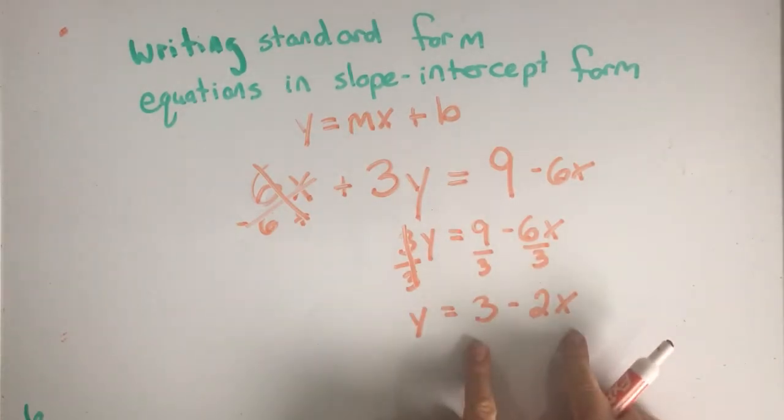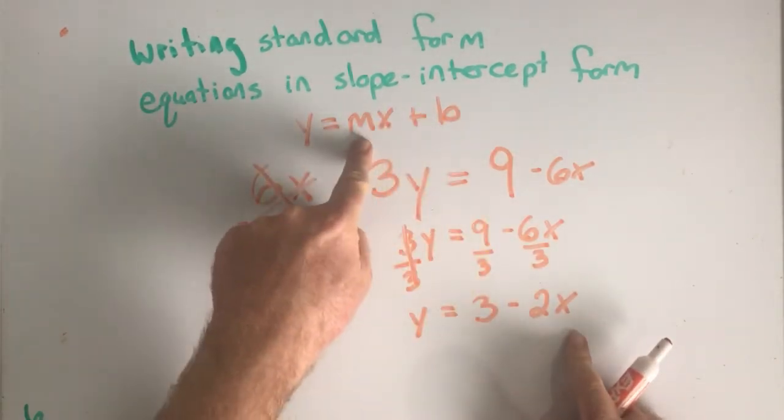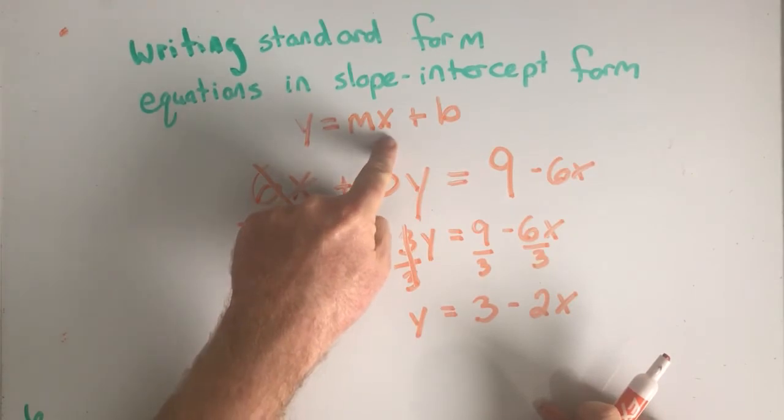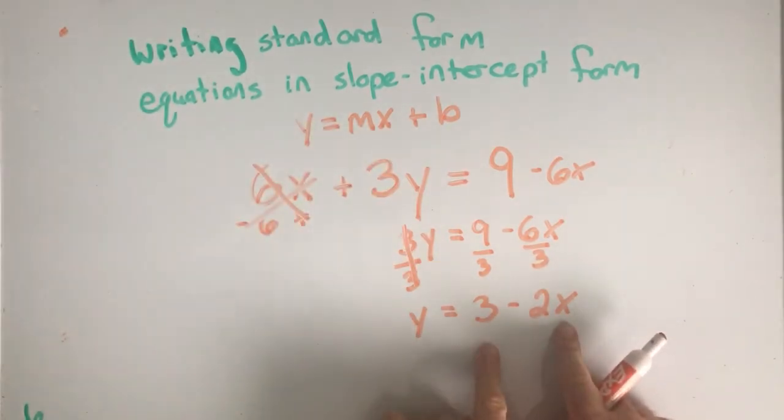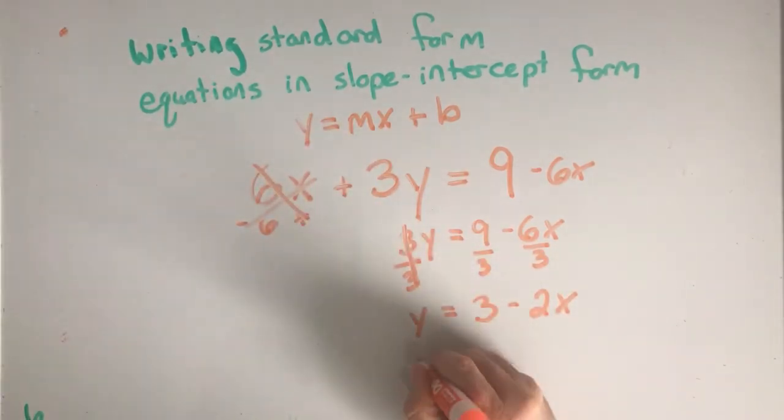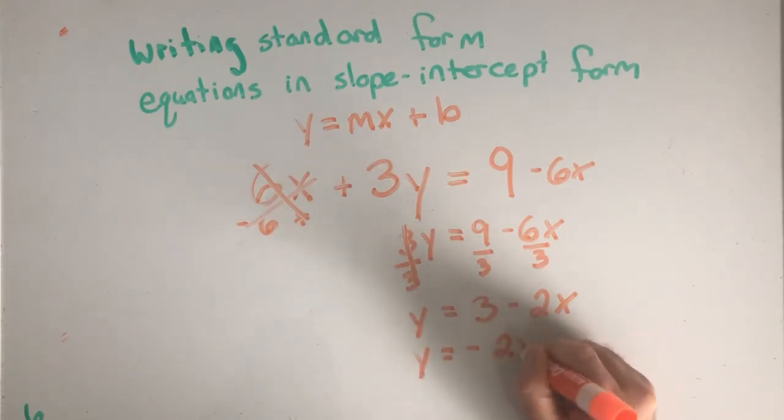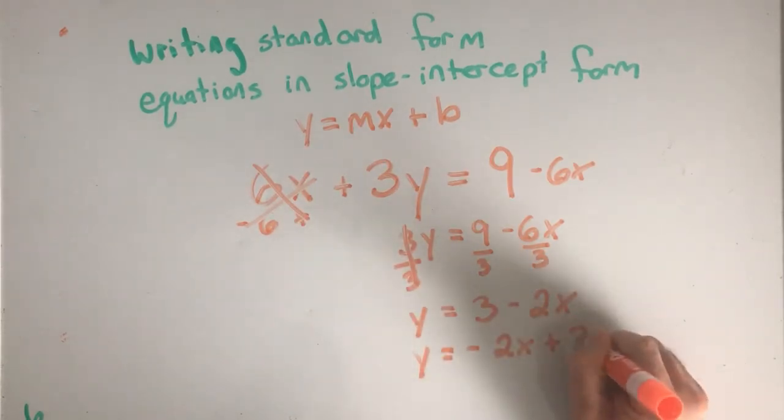Now I want to make sure that I make it look like this. Notice that it's something times x. So here's my something times x, but I need to make sure that it goes in that order. So I'm going to rewrite it as y equals negative 2x plus 3.